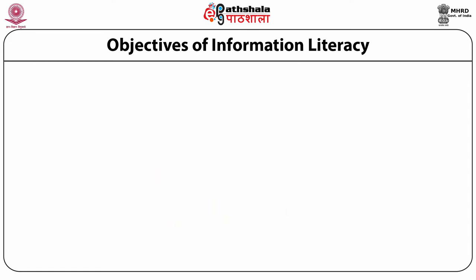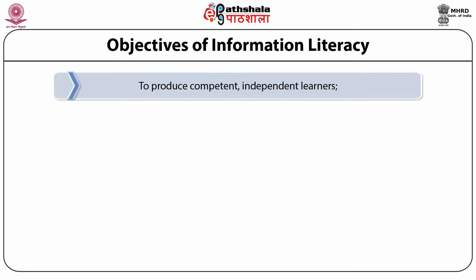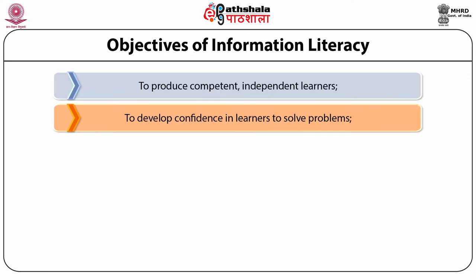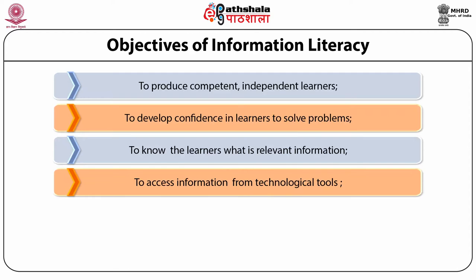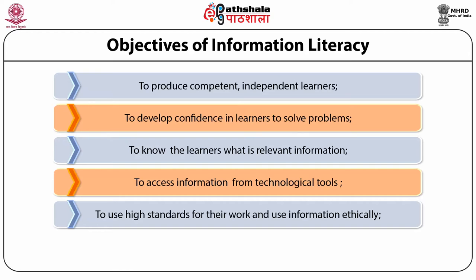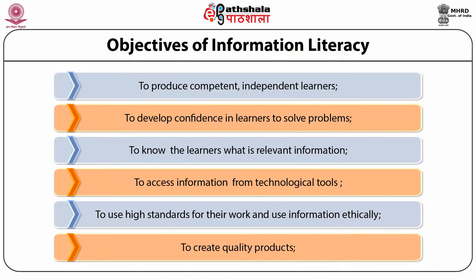There are various objectives of information literacy. These are to produce competent independent learners, to develop confidence in learners, to solve problems, to help learners know what is relevant information, to access information from technological tools, to use high standards for their work, to use information ethically, and to create quality products.